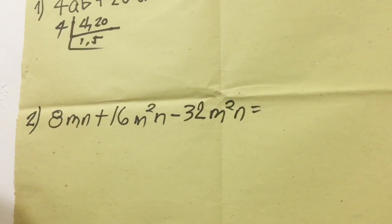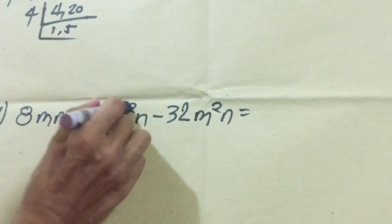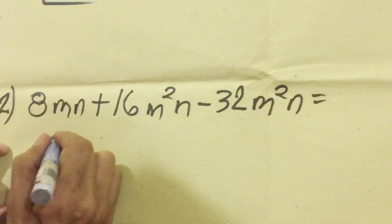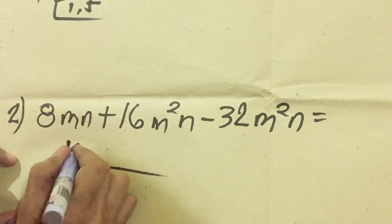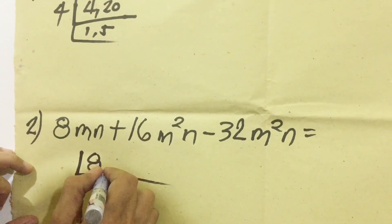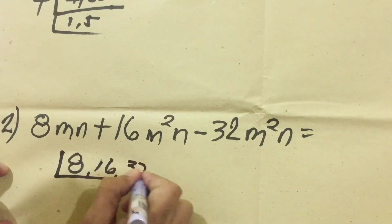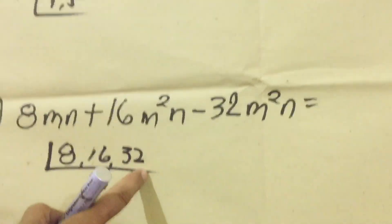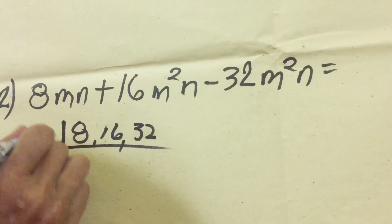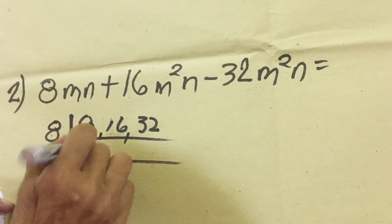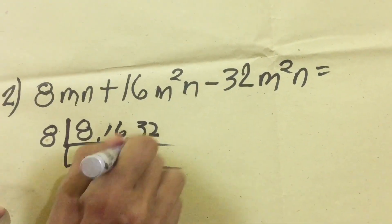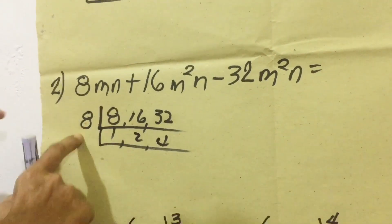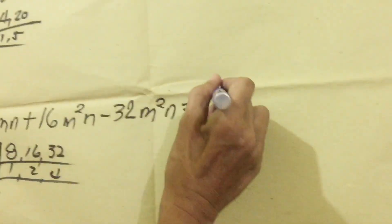Next is number 2: 8MN plus 16M squared N minus 32M squared N. Using continuous division for the greatest common factor. The numerical coefficients are 8, 16, and 32. The greatest common factor is 8. 8 divided by 8 equals 1; 16 divided by 8 is 2; 32 divided by 8 is 4. The remaining numbers have no more common factor, so 8 is our GCF.